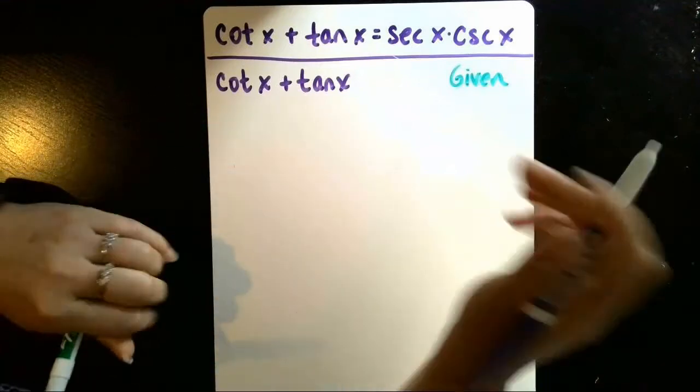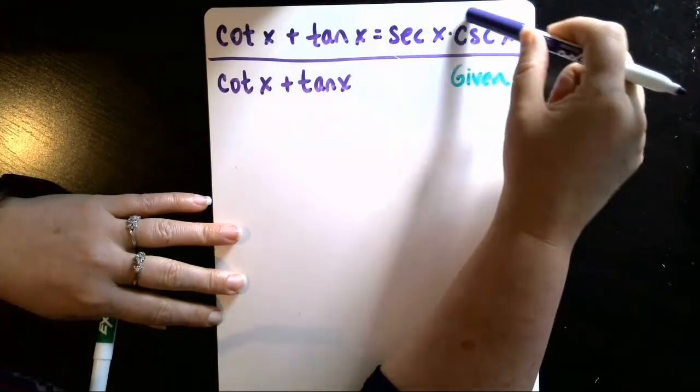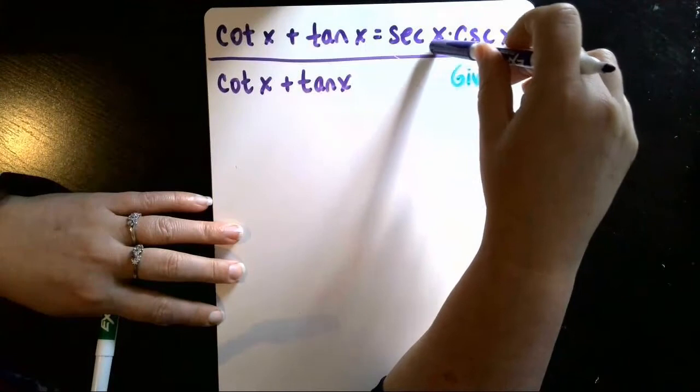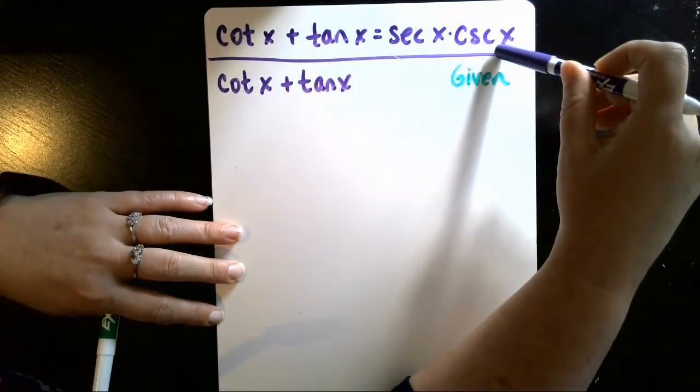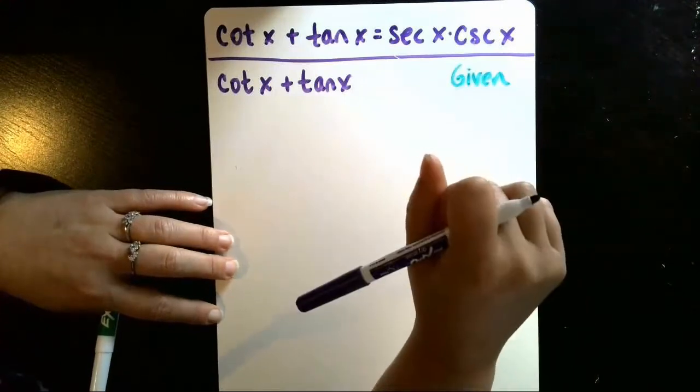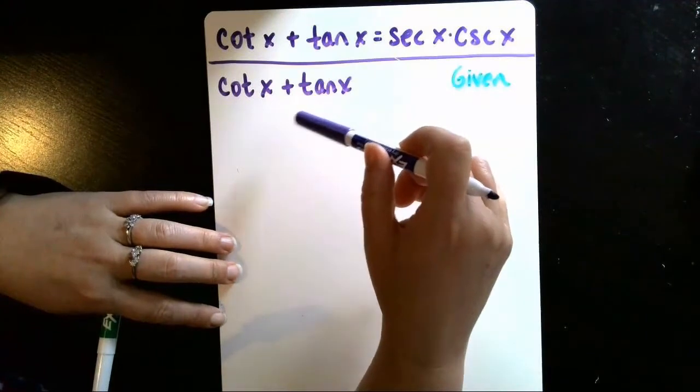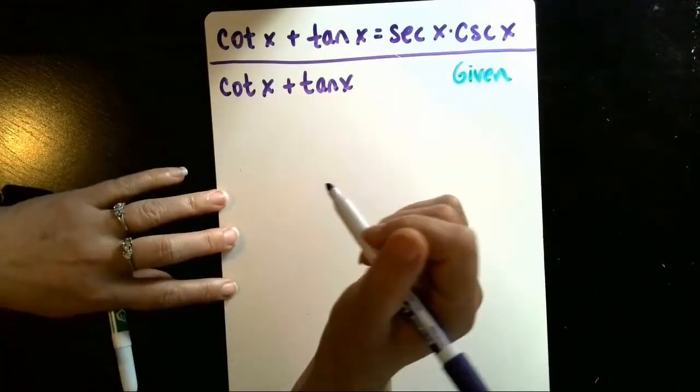Now my goal is to get the sum of two trig functions into a product of secant and cosecant. I know secant is the reciprocal of cosine, cosecant is the reciprocal of sine, so my strategy is going to be to get the cotangent and the tangent changed over into sines and cosines and see if that helps me get any closer.